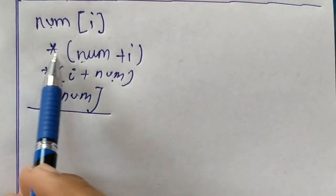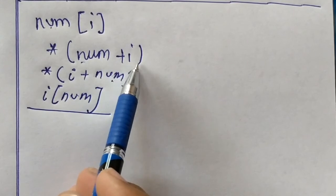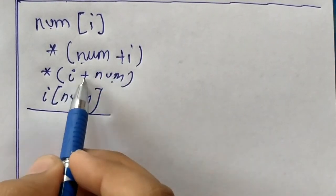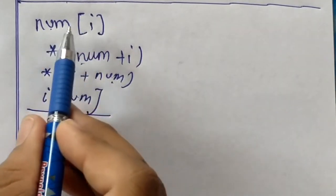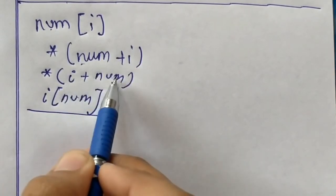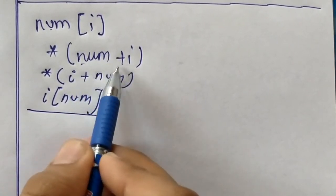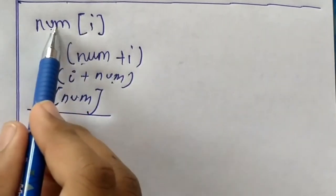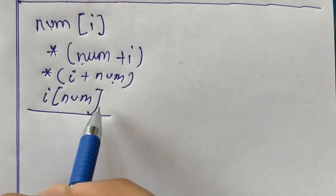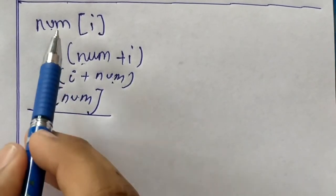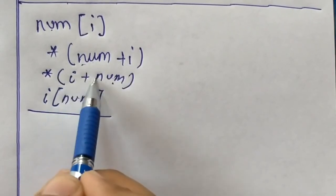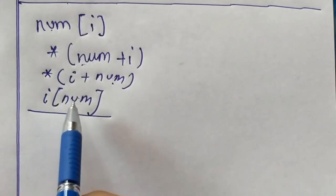So guys, now we can write `num[i]` as `*(num + i)`. And we can also reverse this: `num[i]` can also be written as `*(i + num)`. Since addition is commutative, `i + num` is equivalent to `num + i`. And if we interchange `num` and `i` in the bracket notation, `num[i]` can also be written as `i[num]`.